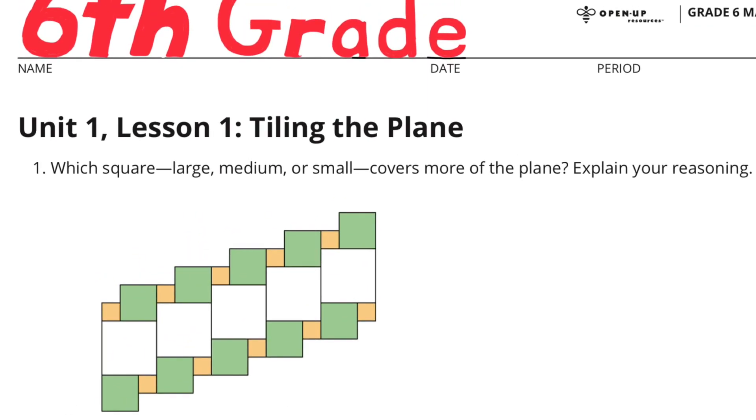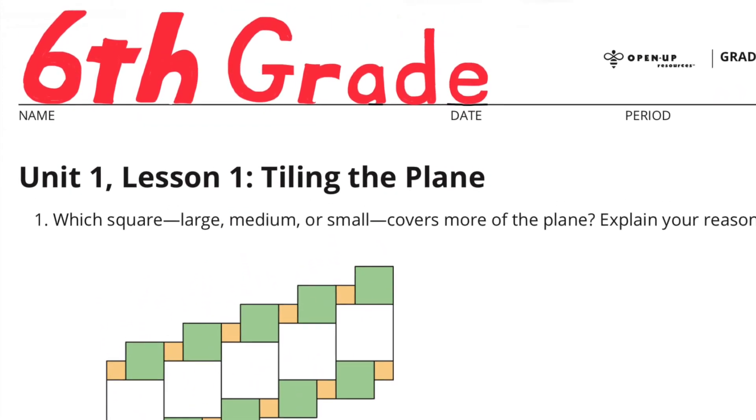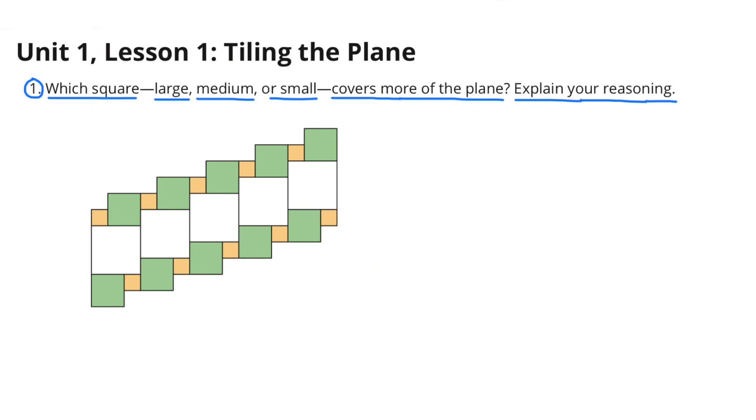Sixth grade, Unit 1, Lesson 1: Tiling the Plane. Number 1. Which square—large, medium, or small—covers more of the plane? Explain your reasoning.